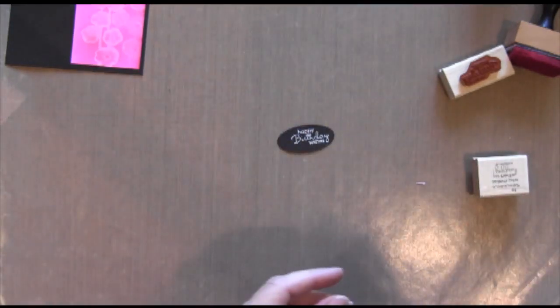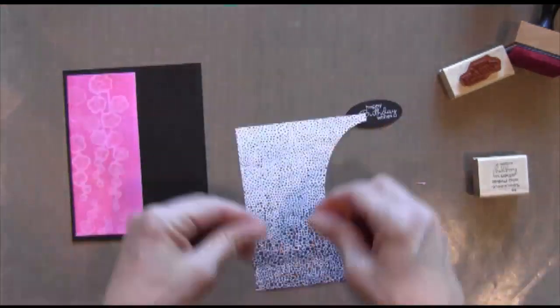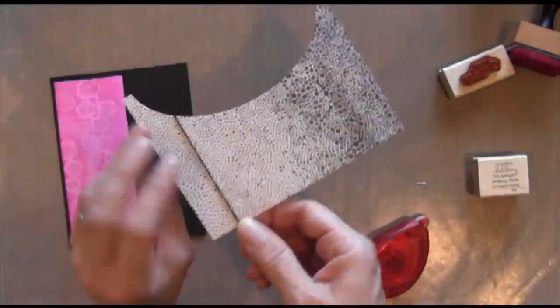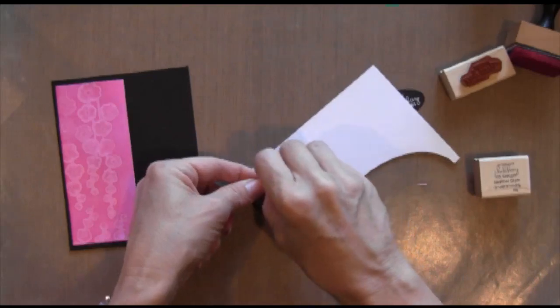I'm going to punch out my sentiment with an oval and make it off-center a little bit because I'm going to be hanging it off the side of the card. And this is just some plain black embroidery thread.